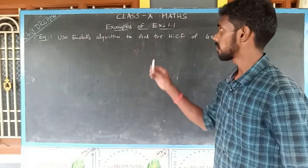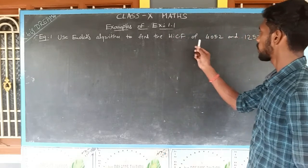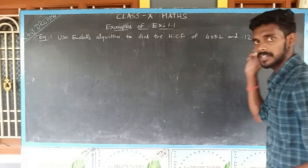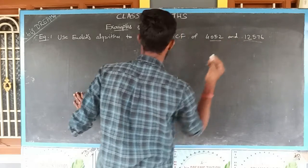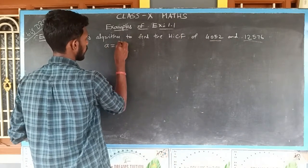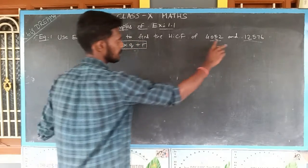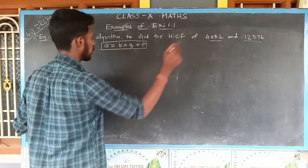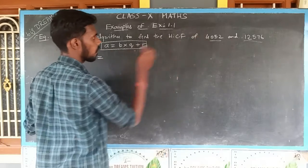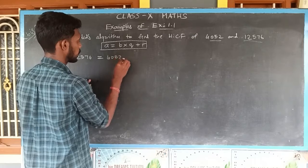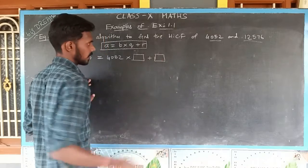Let's see the example sums of Exercise 1.1. The first example: use Euclid's algorithm to find the HCF of the numbers 4052 and 12576. So we have to identify the greater number — 12576 is the greater and 4052 is the smaller. According to Euclid's division lemma, I can write a = bq + r, where a takes the larger value and b takes the smaller value.